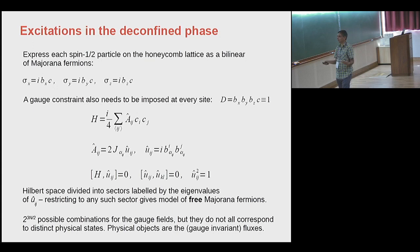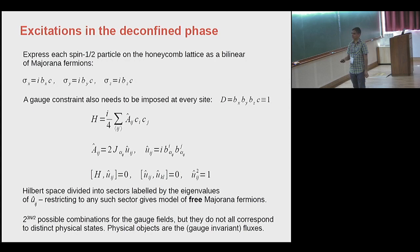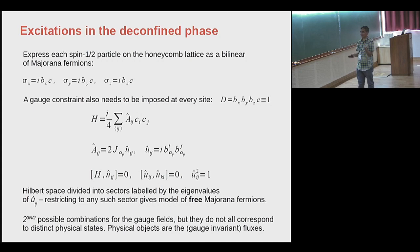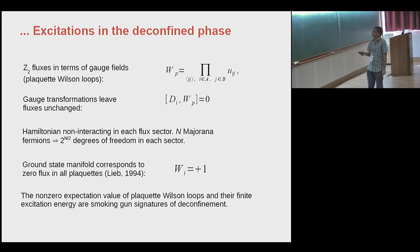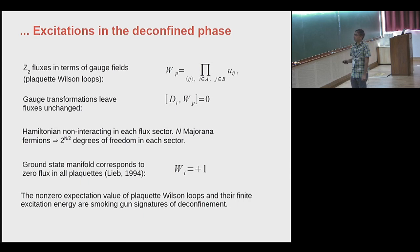It turns out that these Uijs are themselves conserved quantities. They all commute with each other on different bonds, and the square of each is one, so they can take two values: plus one and minus one. This allows me to divide my Hilbert space into sectors labeled by the eigenvalues of Uij, and restricting to any such sector gives me a model of free Majorana fermions. The physical objects are the gauge-invariant fluxes, which in terms of these Majorana fermions take a very simple form — simply the products of Uij factors around the loop. The Hamiltonian is non-interacting in each flux sector once I fix the fluxes.